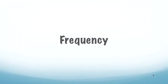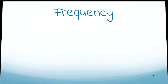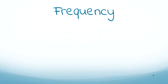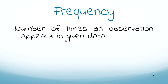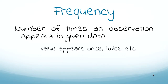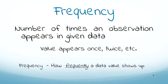Now what do we do with this data? We want to know its frequency. Frequency is the number of times an observation appears in a given data set — whether a value appears once, twice, thrice, and so on. One way to remember it is: how frequently a data value shows up.